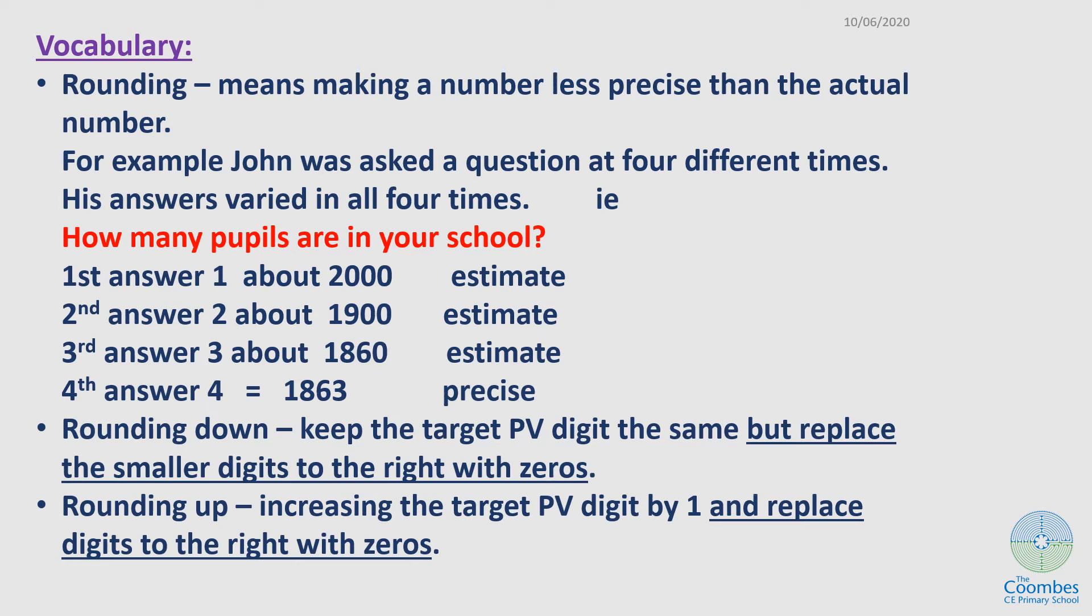Now rounding down. When we say a number is rounded down, that means you are keeping the target digit, the place value digit the same, by replacing the smaller digits to the right with zeros. Rounding up means increasing the target place value digit by 1 and replacing the digits to the right with zeros.